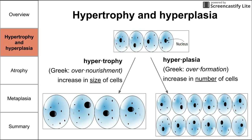An example of hypertrophy and hyperplasia occurring together is in the growth of the uterus during pregnancy.